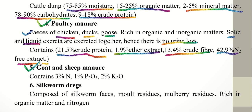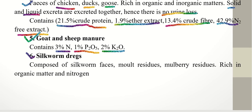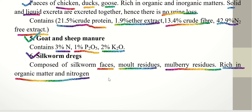Goat and sheep manure has a dry matter content of 42 to 48% and contains about 3% nitrogen, 1% P2O5, and 2% K2O-like components. Silkworm drains are composed of silkworm feces, silkworm waste material, and mold residues, and are rich in organic matter and nitrogen.